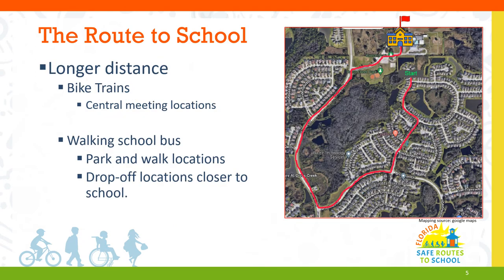Distance can play a big part in whether your group is walking or biking to school. Unlike our previous gridded neighborhood examples, this neighborhood has less connectivity with many cul-de-sacs. While this neighborhood is close to the school, there is no connection to the school from the north side of the neighborhood, so students would have to walk or bike around the neighborhood to get to school. However, each of these neighborhood streets and roads has sidewalks. For longer commutes, bike trains can help reduce the time it takes to travel to school compared to walking.